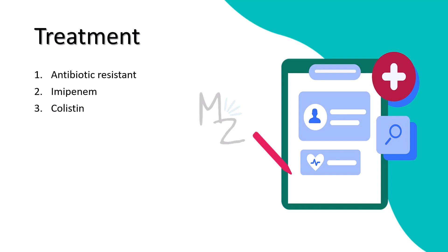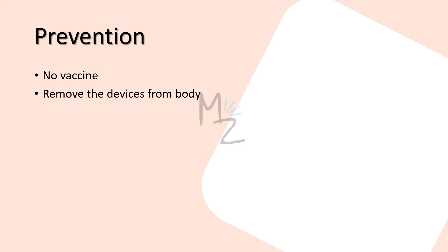Treatment: since this bacterium is antibiotic resistant, the drug of choice for infections caused by susceptible strains is imipenem. Colistin is useful for carbapenem-resistant strains.